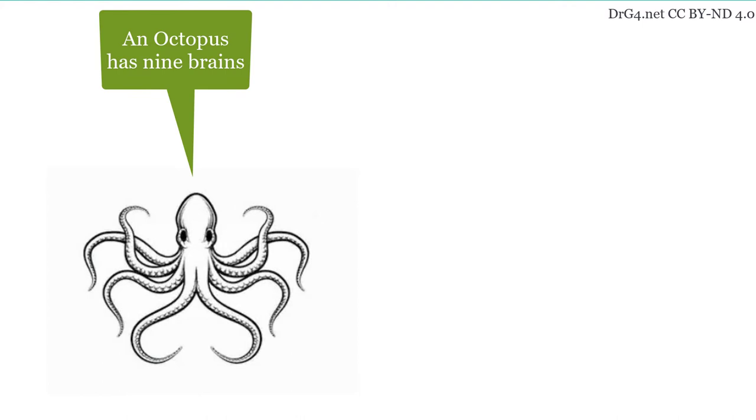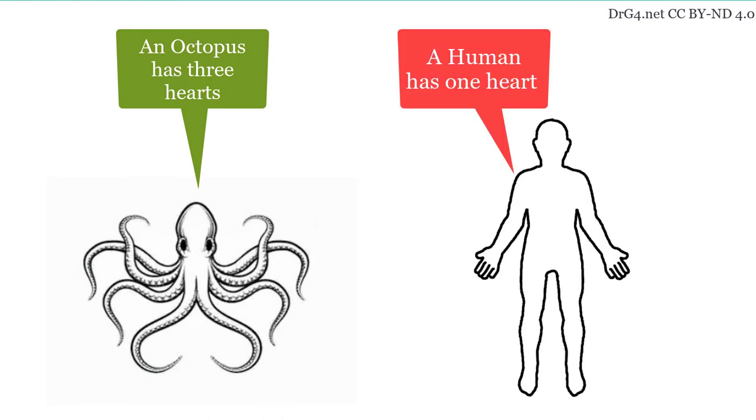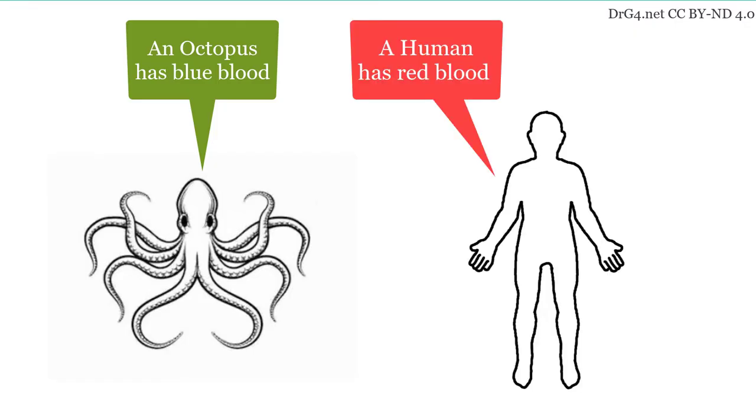An octopus has nine brains. A human has only one. An octopus has three hearts. A human has only one. An octopus has blue blood. A human has red blood.